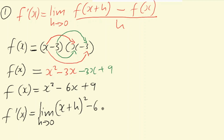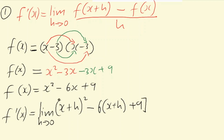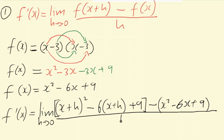...minus f of x, which we copy as it is: minus x squared minus 6x plus 9. The whole expression is divided by h. So f prime of x equals the limit as h approaches 0 of: [x plus h squared minus 6(x plus h) plus 9] minus [x squared minus 6x plus 9], all divided by h.